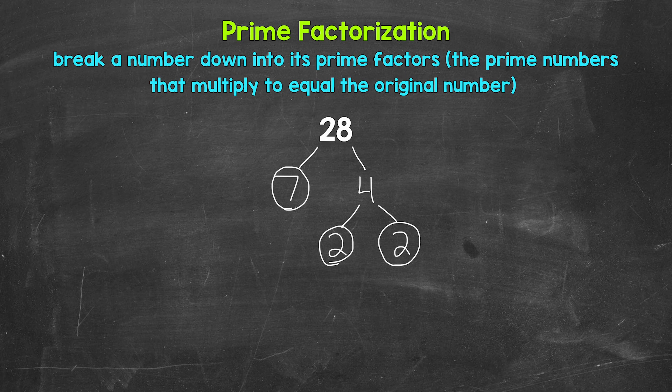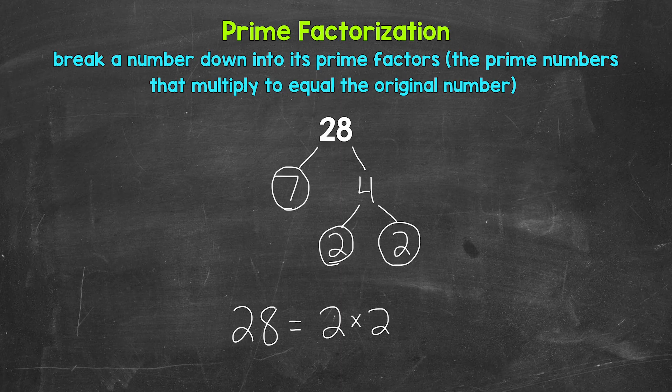We have all prime numbers. So let's write this out as 28 equals, and then we can write our prime factors in order from least to greatest, and we are multiplying them. So we have 2 times 2 times 7. If we have the correct prime numbers, they will multiply to equal our original number. 2 times 2 is 4, times 7 is 28. So we are correct. There's the prime factorization of 28.